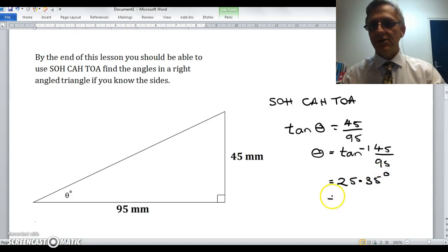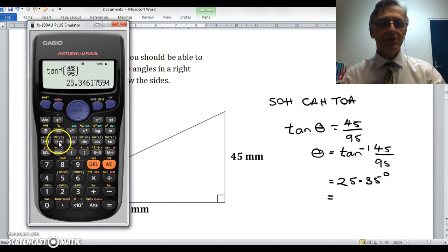Now I can do that in degrees, minutes, and seconds, by pushing the degrees, minutes, and seconds button. And it tells me that's 25 degrees and 21 minutes, I'm going to round that up.